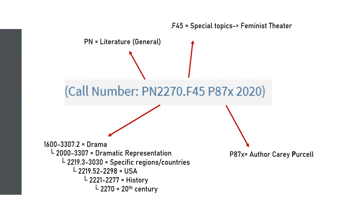Another letter-number code is derived from the author's last name, and then the publication date is added to the end. Notice that this means that different works by the same author will only be placed together if they are on the same fairly narrowly defined topic.